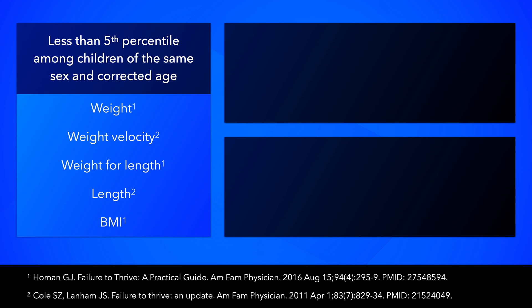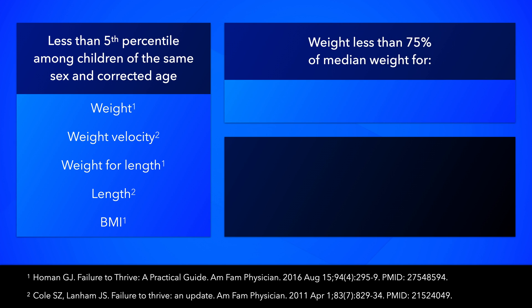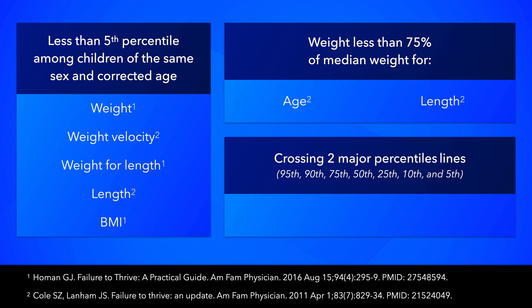The diagnosis of failure to thrive may still be considered for children above the 5th percentile for the aforementioned growth parameters if their weight is less than 75% of median weight for age or length, or if two major percentile lines have been crossed in regard to weight for age or weight for length.